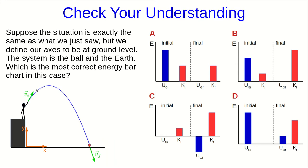In the problem I just worked, I defined my axes so that the origin was at the initial location of the ball. But what if I had decided differently? What if I had located the origin down on the ground, which might be what you're more inclined to do? In that case, what would the energy bar chart look like?